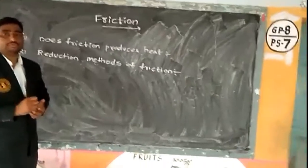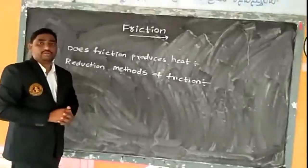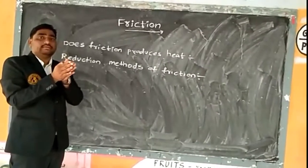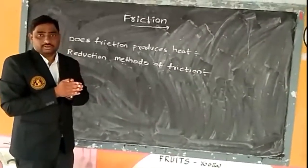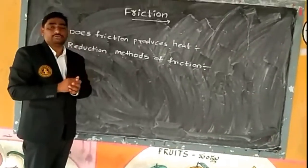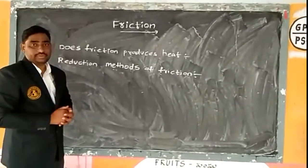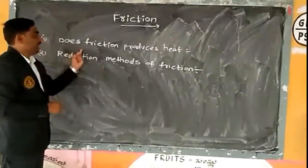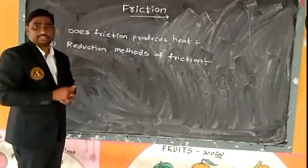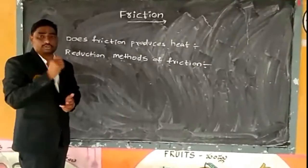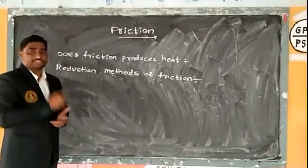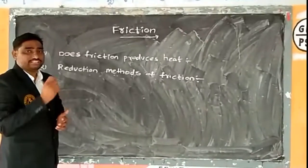From these two examples, we can observe one thing. When the palms are being rubbed against each other, the surface of the palms is going to increase in temperature. In the same way, when the matchstick is being rubbed against the rough surface of the matchbox, the surface of both are going to increase in temperature.